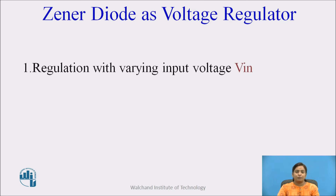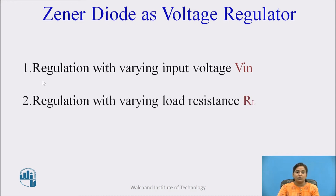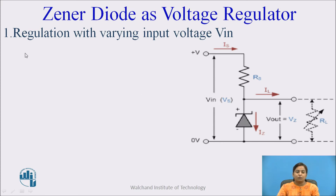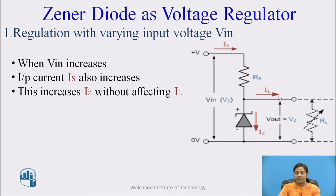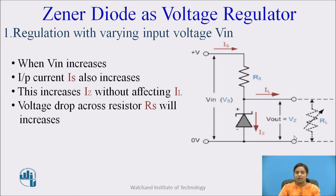Now the working of Zener diode as a voltage regulator can be observed under two heads. First, regulation with varying input voltage Vin. When input voltage Vin increases, the input current IS also increases, increasing Iz without affecting IL. So input voltage increases, IS increases, Iz proportionally increases, but IL remains as it is. The voltage drop across the series resistor RS increases as IS increases, and at that time the output voltage remains constant.